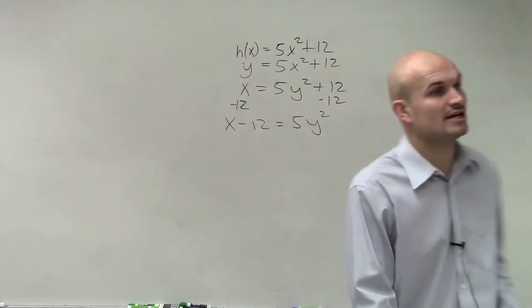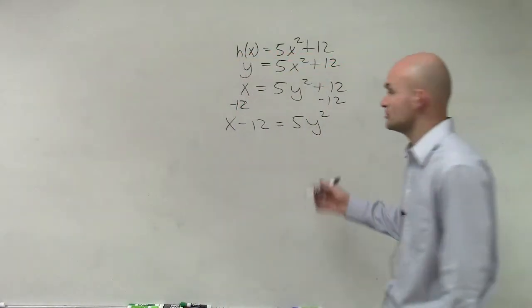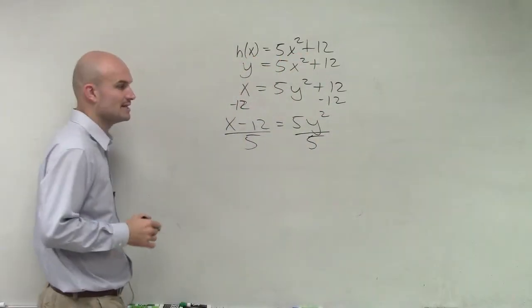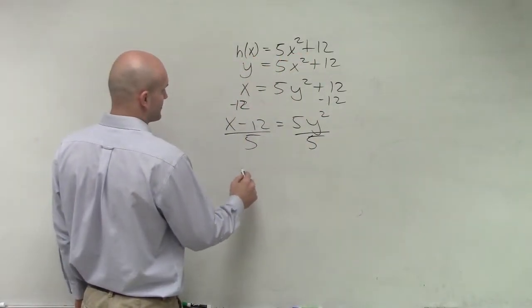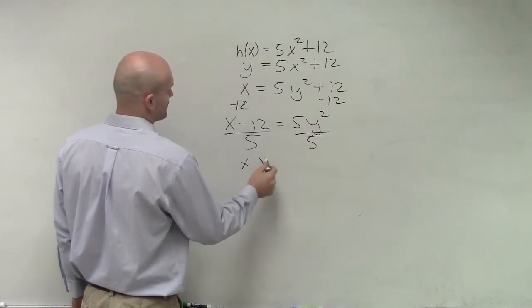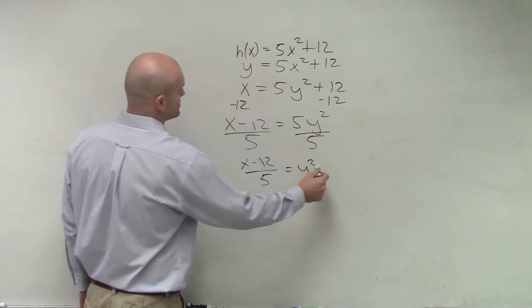Then the next inverse operation I need to undo is multiplication by 5. So I undo multiplication by 5 by dividing by 5 on both sides. Therefore, I get (x - 12)/5 = y².